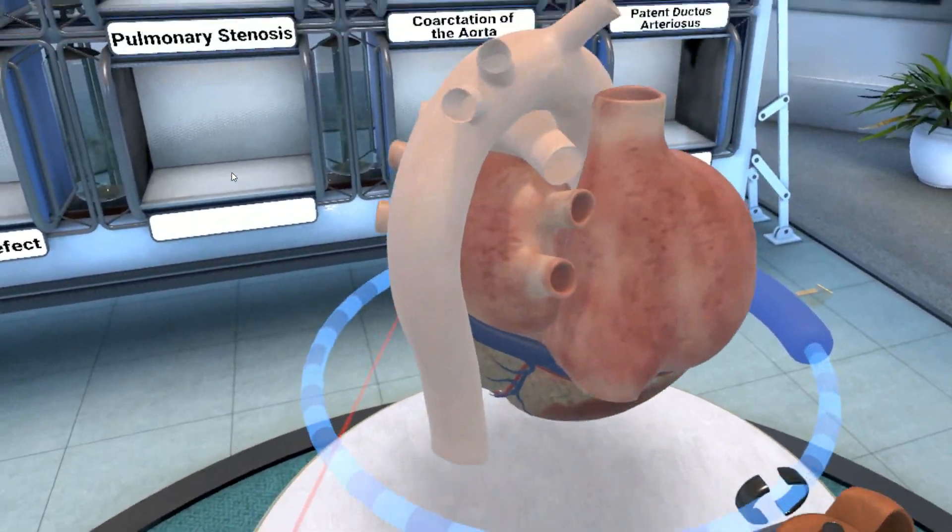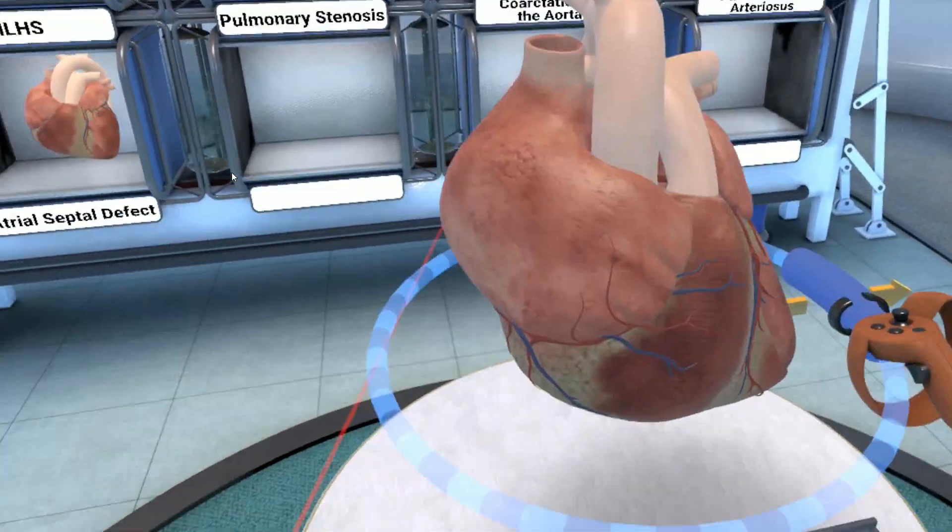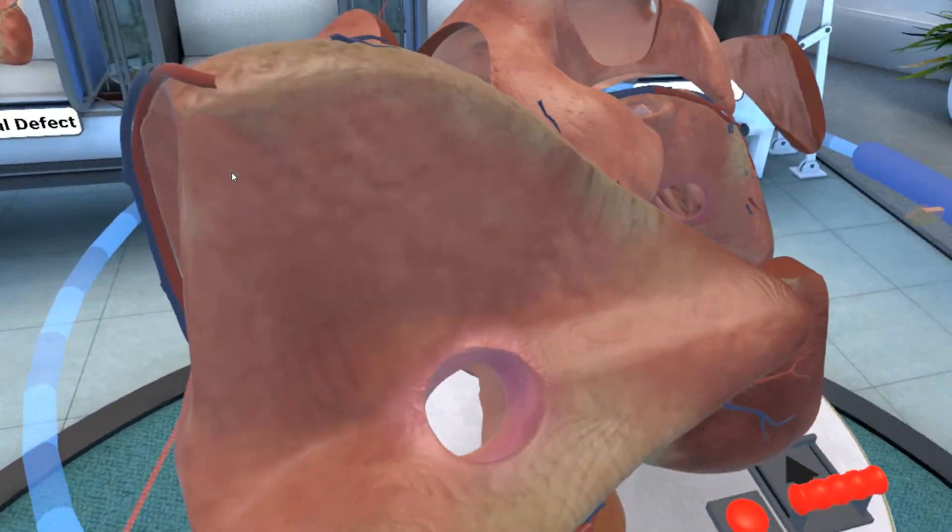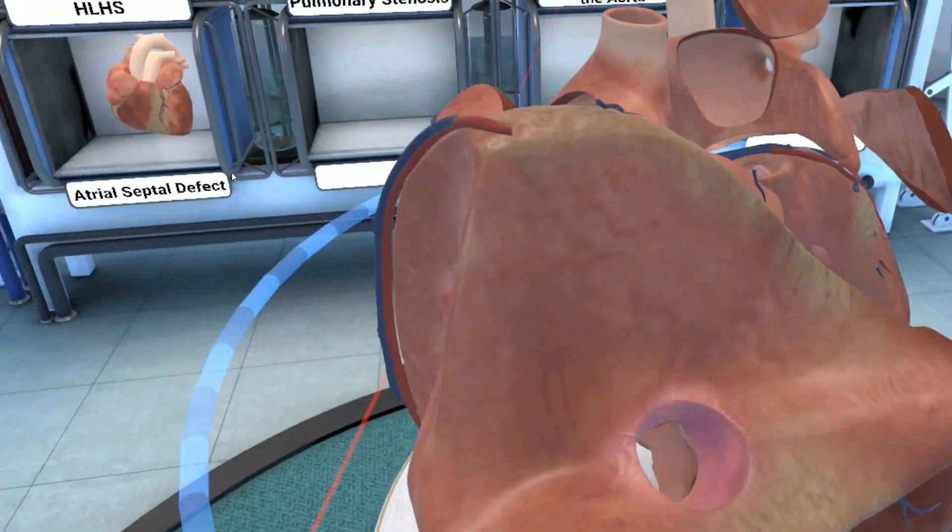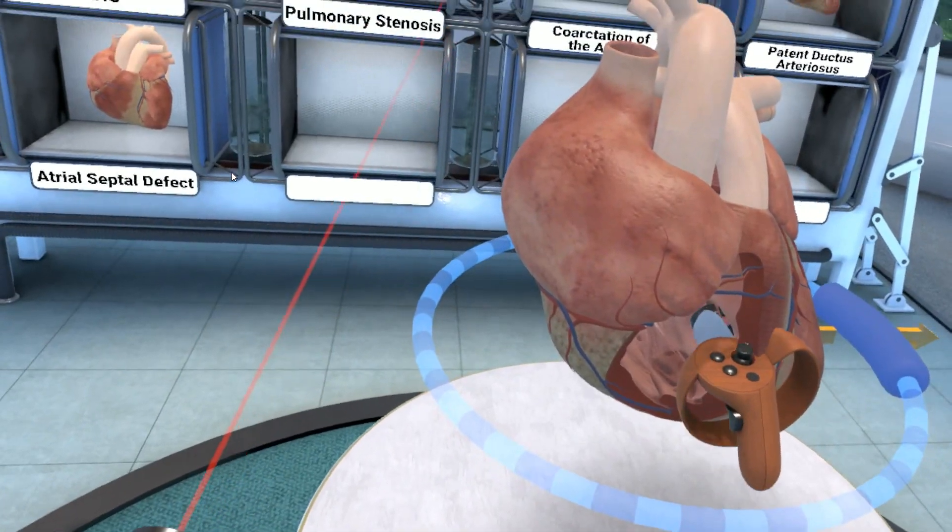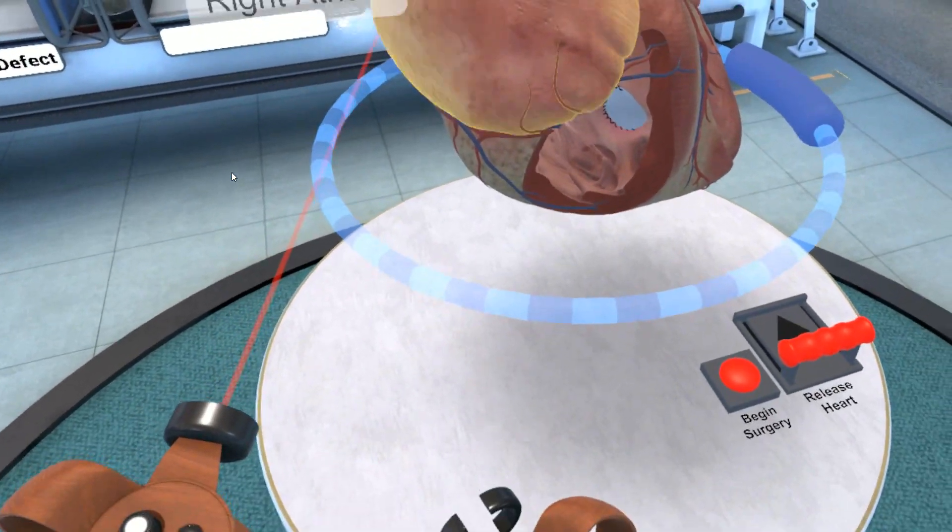In this case, there is a hole in the heart. This weird garden hose sound is blood flowing from one side to the other. You can see the hole over there. I can do a surgery and repair that hole.